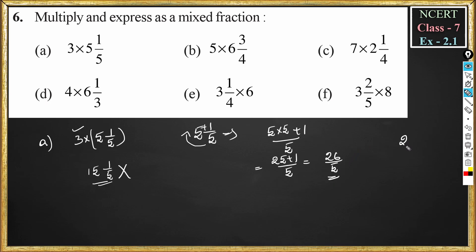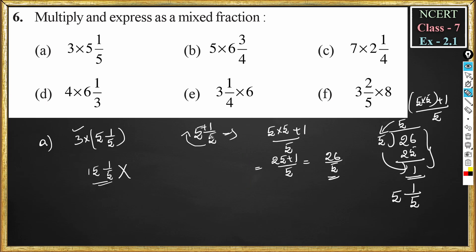If you divide 26 by 5: 5 fives are 25, so the remainder is 1. To write this in mixed fraction form, we write 5 as the quotient, then remainder 1 in the numerator and denominator 5. So 5¹/₅ is confirmed to convert to 26/5. Now 3 into 5¹/₅ can be written as 3 into 26/5.